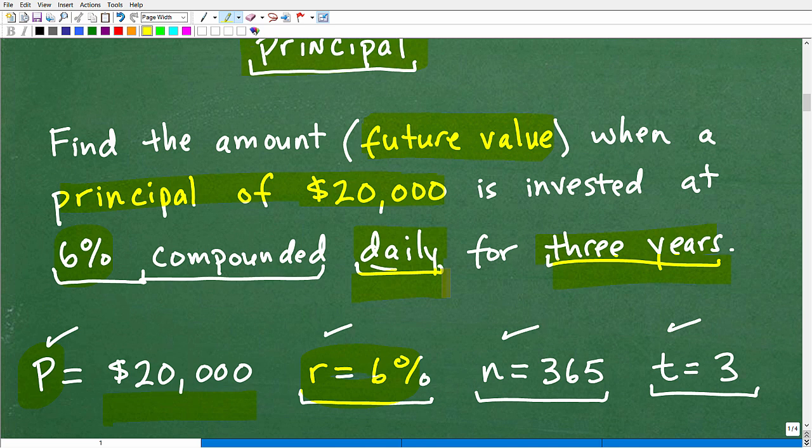You can have things being compounded quarterly, so that would be N equals four, or biannually, that would be two. And then how many years, you might get this in three years, eight months. You'll have to convert those into years. So your time, your T values, sometimes you'll have to do some conversions so you're accurately plugging in the right amount.